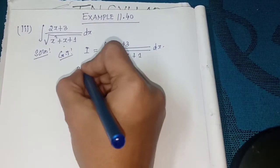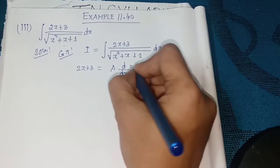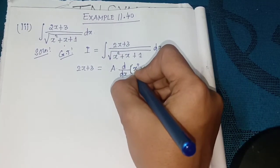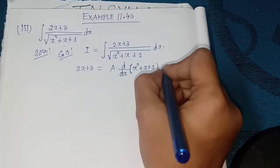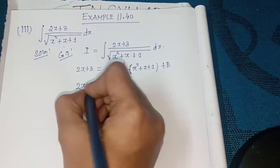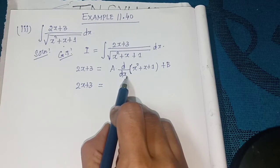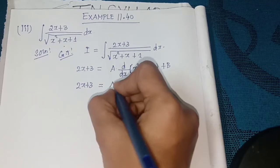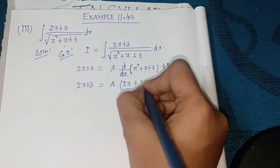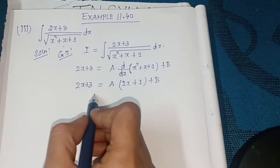So, let 2x + 3 equal to a times d/dx of (x² + x + 1) plus b. Differentiating x² + x + 1 gives 2x + 1, so 2x + 3 = a(2x + 1) + b. Now compare the coefficients of like terms.